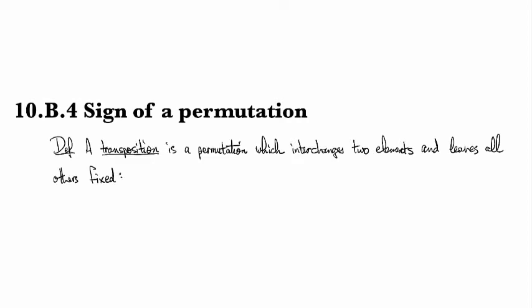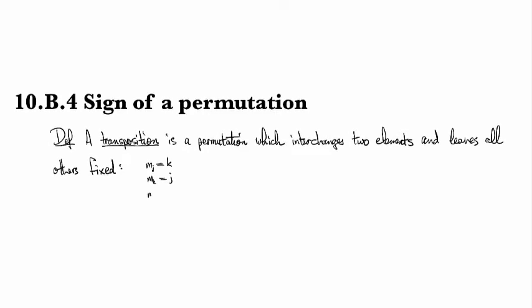Formally, this means that we might have something where m(j) is equal to k, and m(k) is equal to j, and then m(i) is equal to i for any i not equal to j or k.